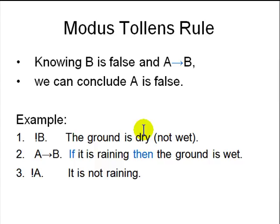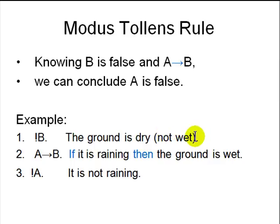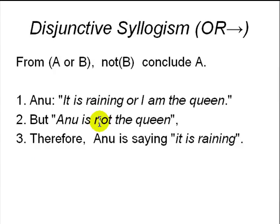You can also do the converse: if you know that B is false, then A has to be false. That is called modus tollens in Latin. For example, 'the ground is not wet — the ground is dry' is given, and the rule is 'if it is raining then the ground must be wet.' So we can conclude it is not raining.